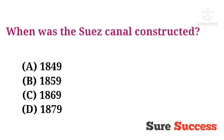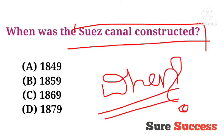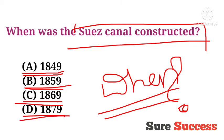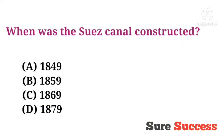When was the Suez Canal constructed? Options are 1849, 1859, 1869, and 1879. The correct answer is 1869.